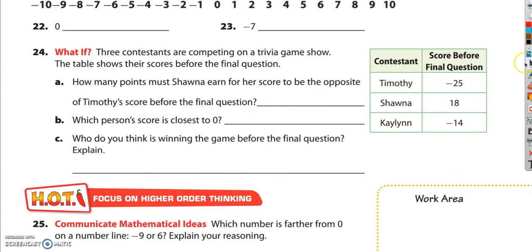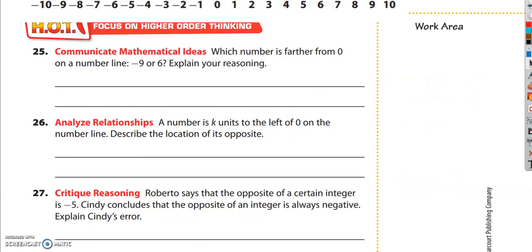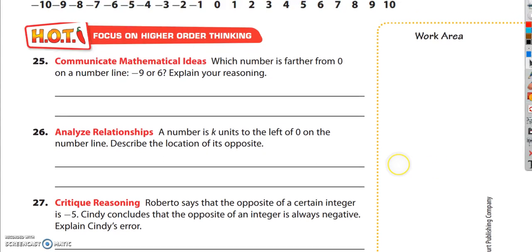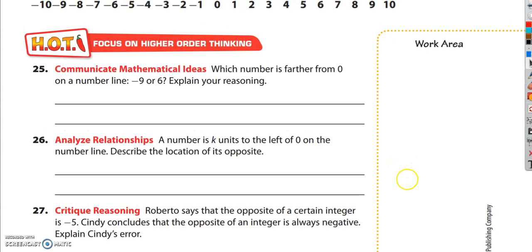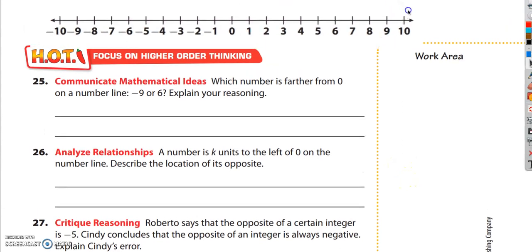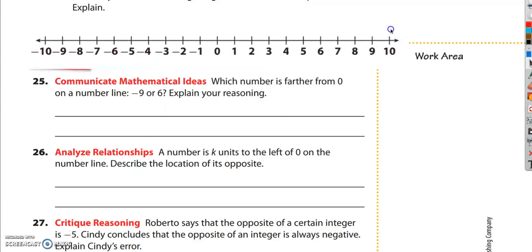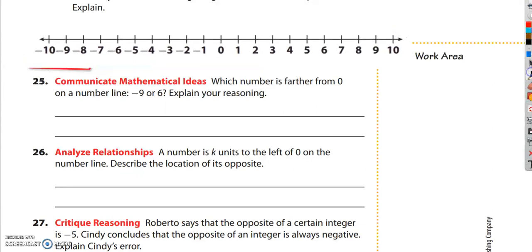Okay, we're moving on to the HOT questions here. That word HOT stands for higher order thinking skills, and these are often the hardest ones. But in this case, they're not too hard. I'm going to grab our number line and bring it down. Number 25, communicate mathematical ideas. Which number is farther from 0 on a number line? Is it negative 9 or is it 6? And explain your reasoning.